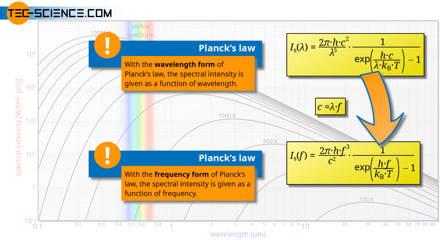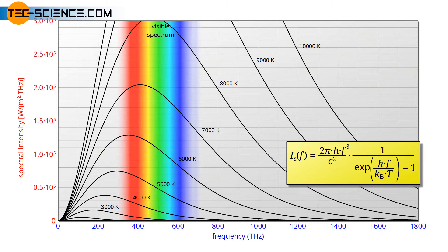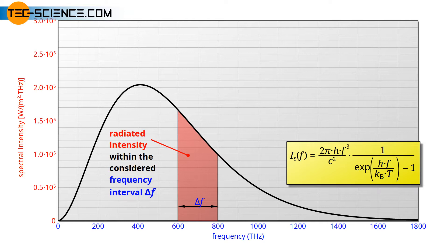Therefore, the spectral distribution of the intensity can also be expressed as a function of frequency. The diagram shows the spectral distribution for different temperatures. In this case, the spectral intensity refers to the radiated intensity per unit frequency. Thus the intensity is related to the frequency, and the area under the curve represents the radiated intensity within the considered frequency interval. In order to determine the total radiated intensity of a blackbody at a certain temperature, the total area under the curve must be determined.